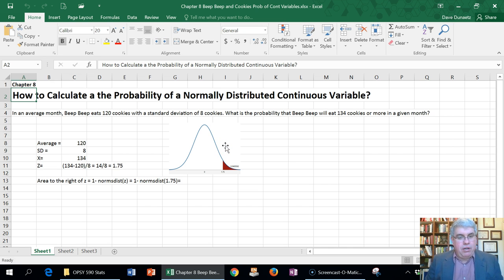And we want to calculate the area that is 134 cookies or more, that tail over there. And the way that we're going to do that is we're going to calculate a Z score, and then we're going to use our NORM.S.DIST in Excel, which gives us the area to the left. And then we can subtract that from one to get the area to the right.